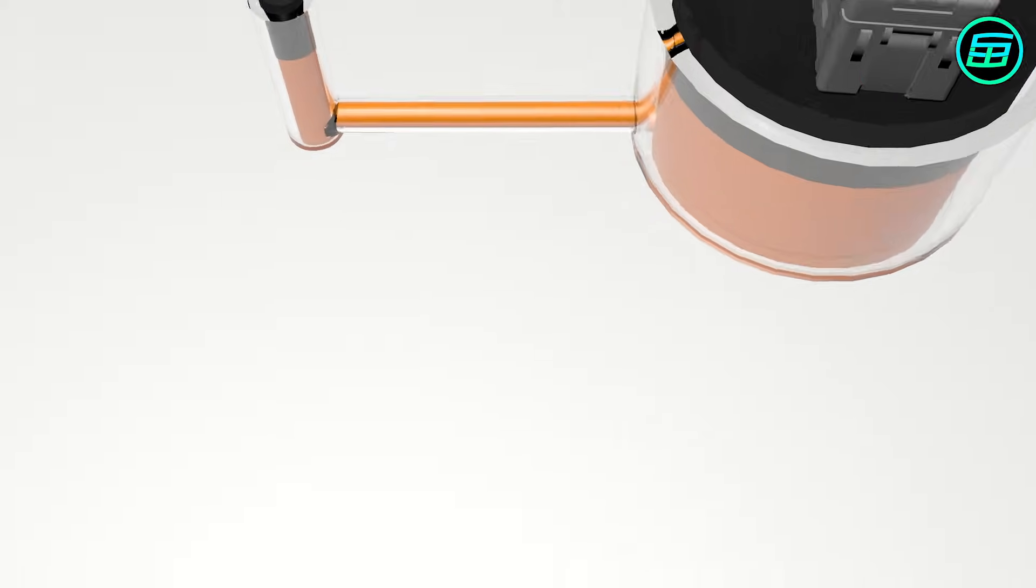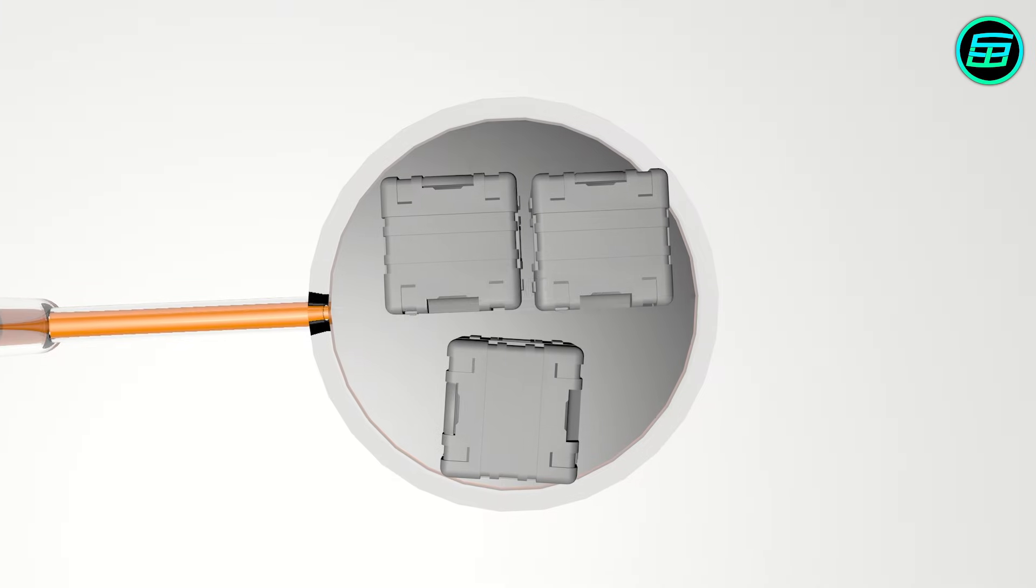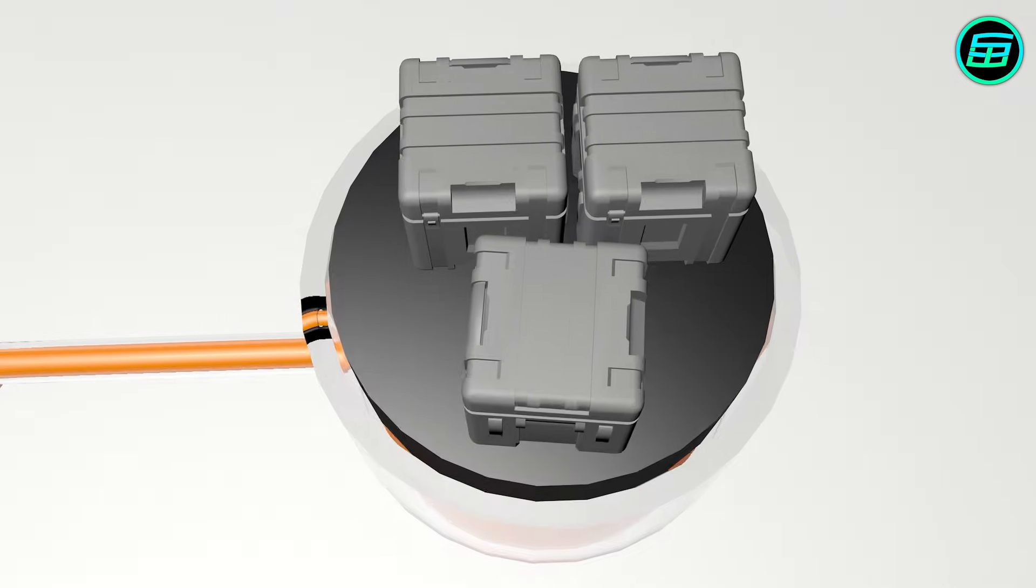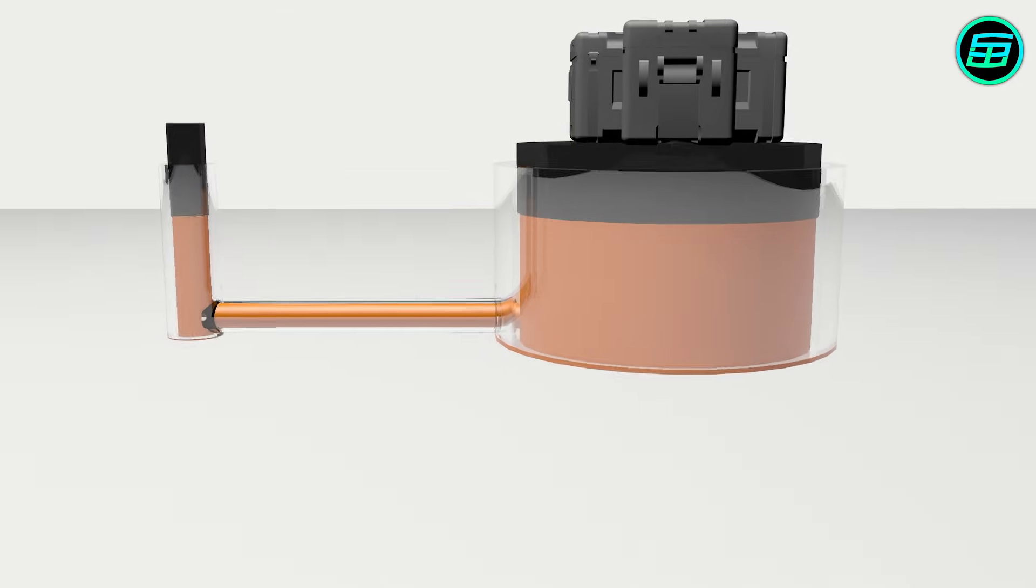Suppose the radius of the first piston is 10 cm and the radius of the second is 100 cm. When we apply a force to the first piston, it creates a pressure change in the fluid, and this change is transmitted to the base of the second piston.